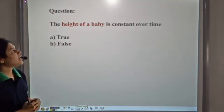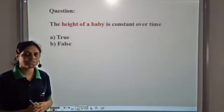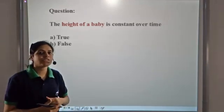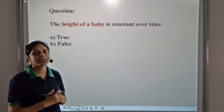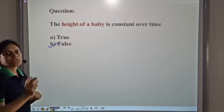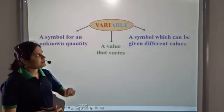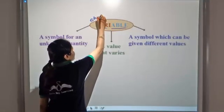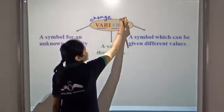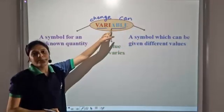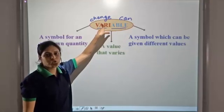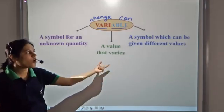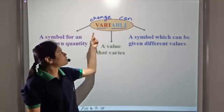Let us solve a question: the height of a baby is constant over time — is it true or false? The height of a baby over time increases as the baby grows and develops, so it is not constant but varies with time. Hence this statement is false. Note that the word variable is made of 'vary' and 'able' — vary means change, and able means can. So a variable is something which can change or vary. A variable is a symbol for an unknown quantity; it is a value that varies or a symbol which can be given different values.